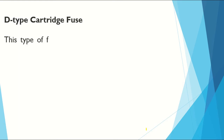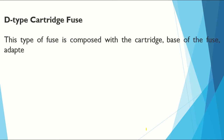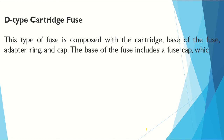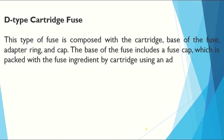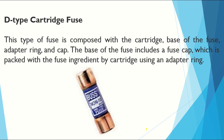D-type cartridge fuses. This type of fuse is composed of a cartridge, fuse base, adapter ring, and cap. The base of the fuse includes a fuse cap which is packed with the fuse ingredient by cartridge using an adapter ring.